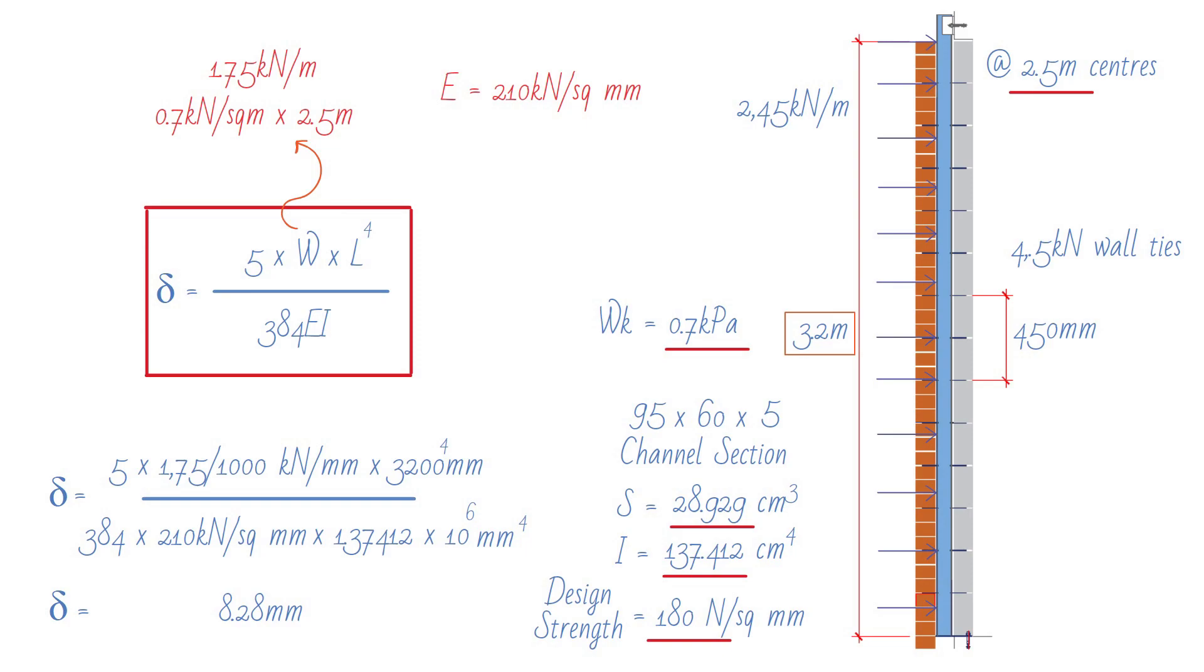Much like beams that support brick walls, windposts are subject to stringent movement criteria. Masonry is sensitive to any form of excessive displacement and is likely to crack if movement due to variable actions exceeds span over 360, or plus or minus 5 millimeters.